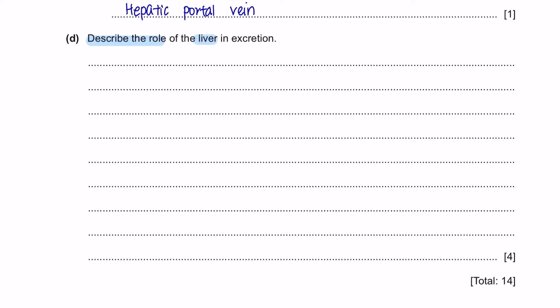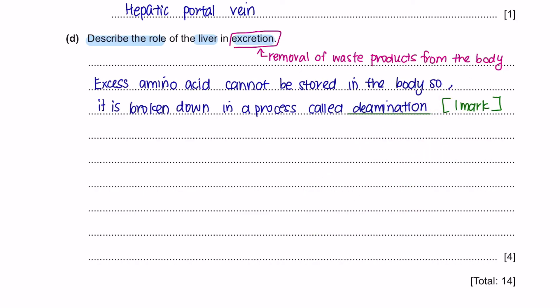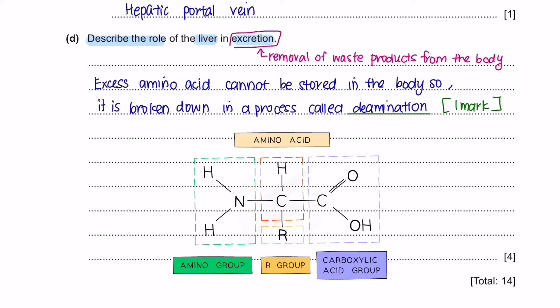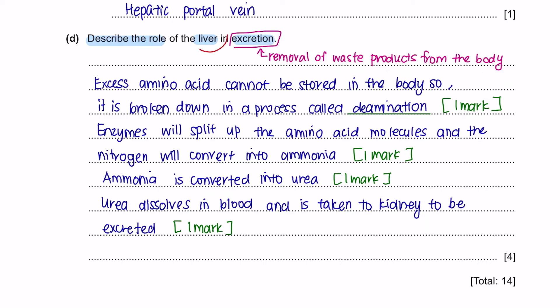Question D, describe the role of liver in excretion. Excretion is the removal of waste products from the body. Many digested food molecules in the small intestine are absorbed into the blood and carried into the liver for assimilation. Assimilation is when food molecules are converted to other molecules of the body. When excess amino acids are absorbed into the blood that are no longer needed to make protein, these amino acids cannot be stored. So they are broken down in a process called deamination. The enzymes in the liver will split up the amino acid molecules and convert the nitrogen molecule into ammonia. Ammonia is highly toxic so it is immediately converted into urea and the urea dissolves in the blood and is taken to the kidney to be excreted. The liver is also responsible for the breakdown of lactic acid during aerobic respiration.